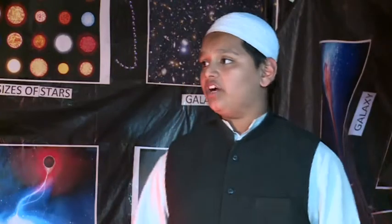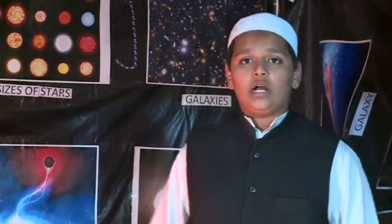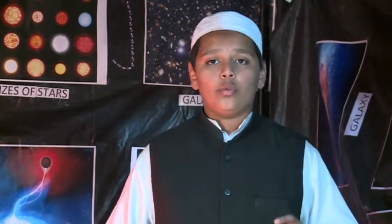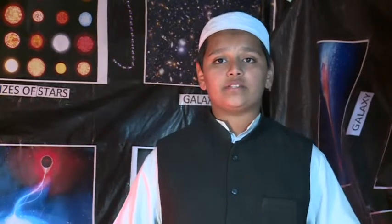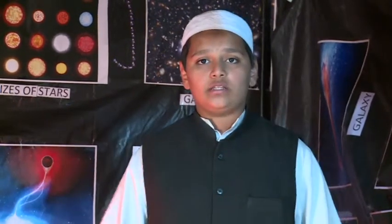Now, what is a neutron star? When bigger stars run out of their fuel, they either form a neutron star or get collapsed into a black hole. A teaspoon of neutron star material would weigh much more than a locality, and its mass is twice the mass of the sun.